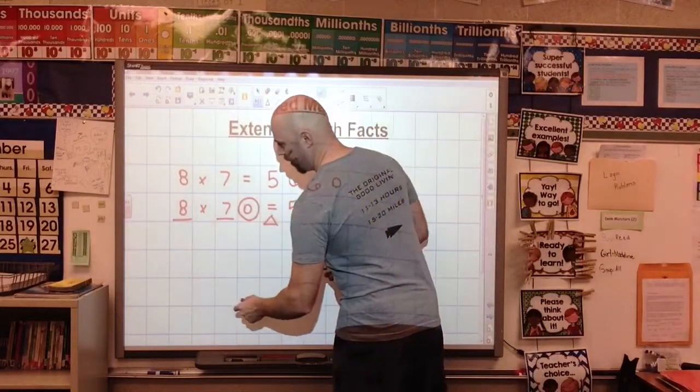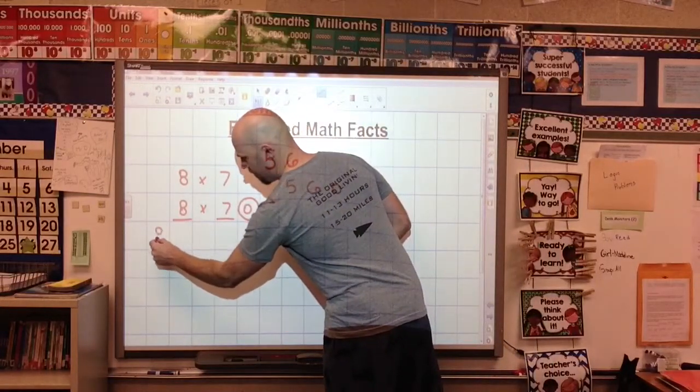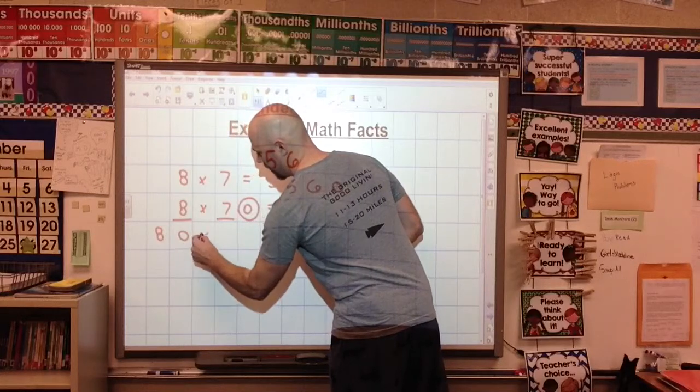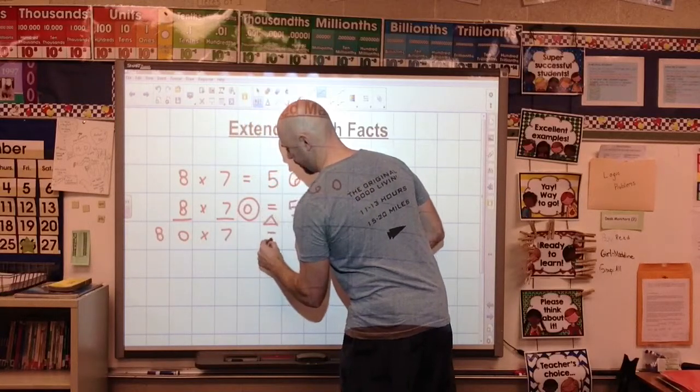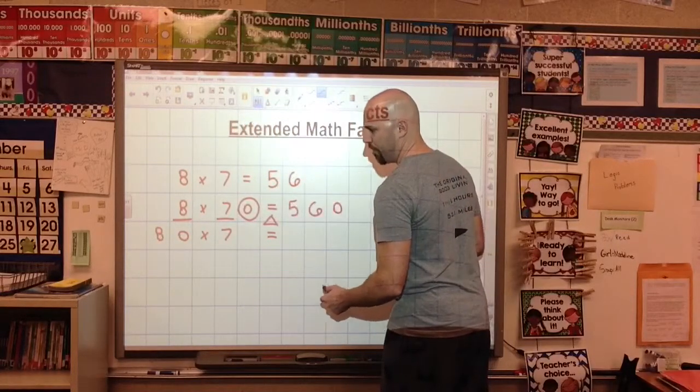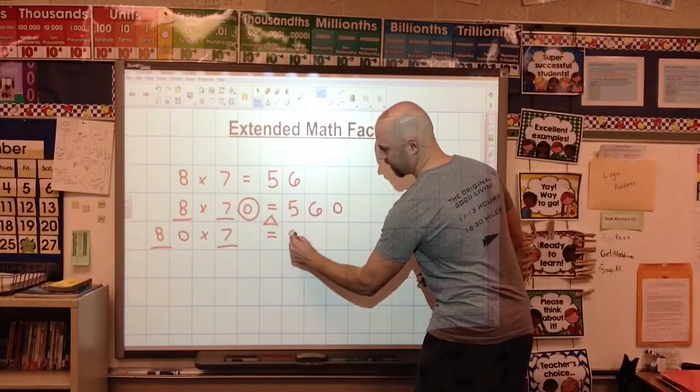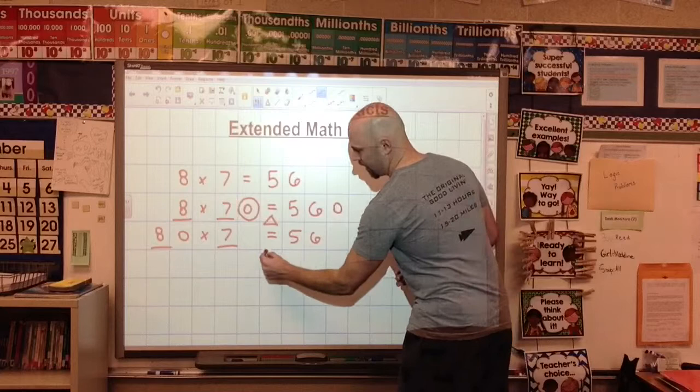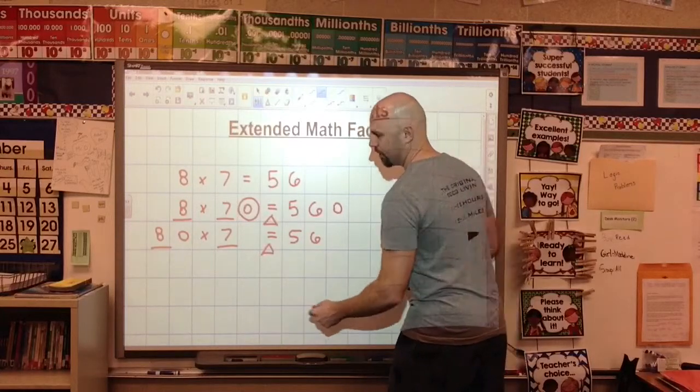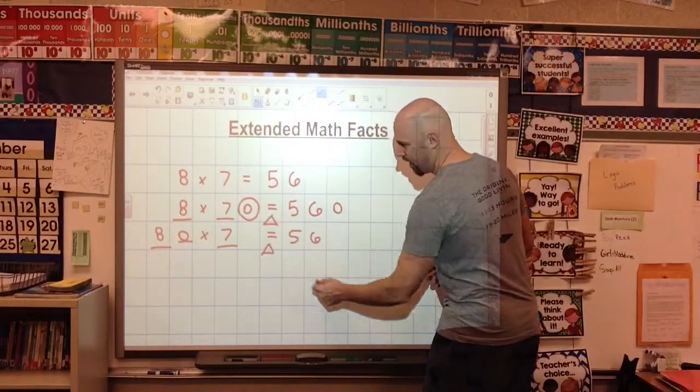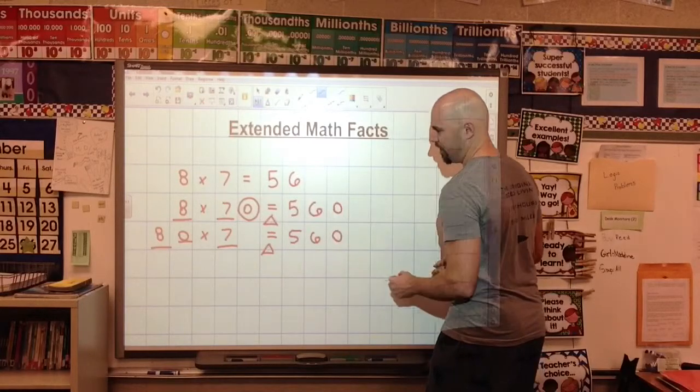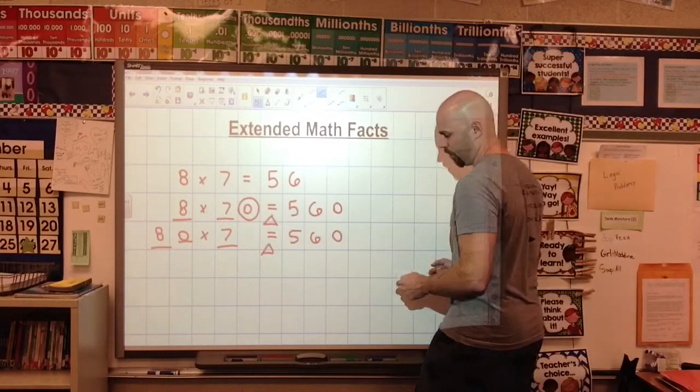If you flip-flop it the other way, let's say we did 80 times 7. Same thing is going to happen. Where's my math fact? 8 times 7 is 56. And then there's that teeter-totter. Find that balance. They've got one 0 on this side of the equal sign, we need to put one 0 on this side of the equal sign.